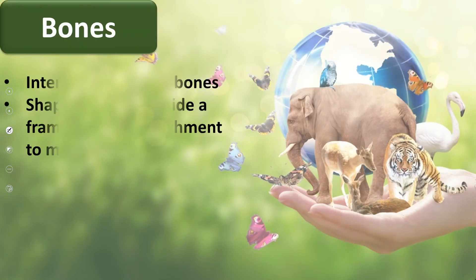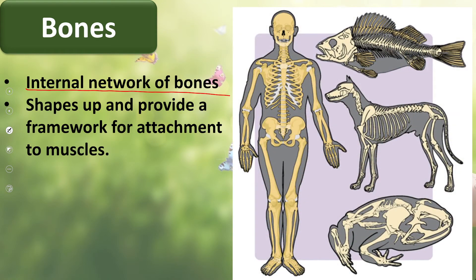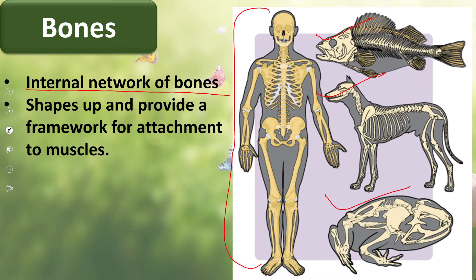To summarize bones: the internal bone network inside the body shapes the body and provides support — this is called the skeleton. Different vertebrates have different types of skeletons. This framework supports all animals, muscles attach to it, and it helps in movement.